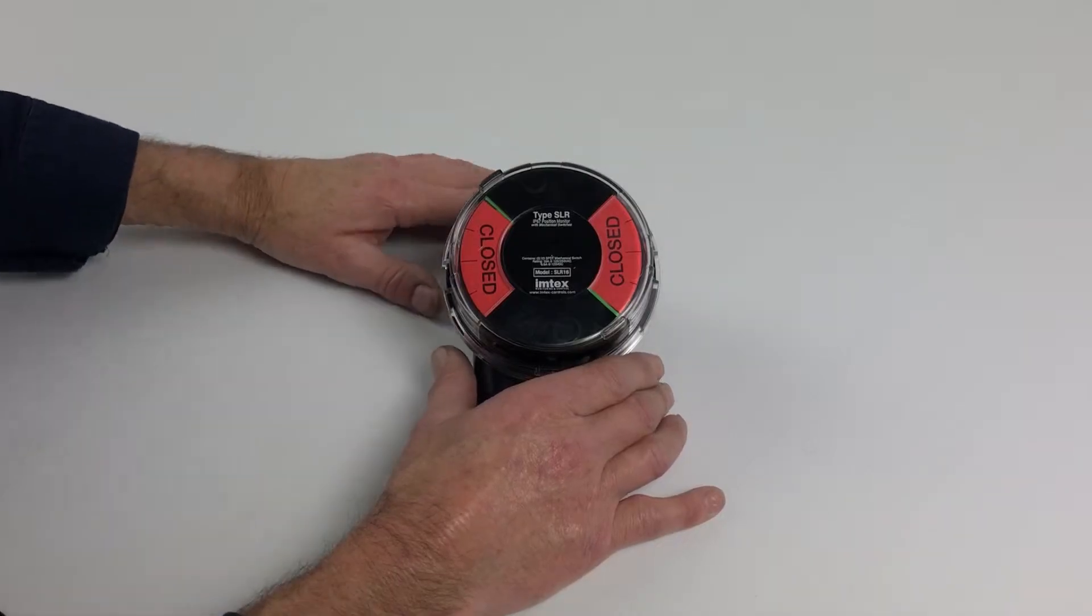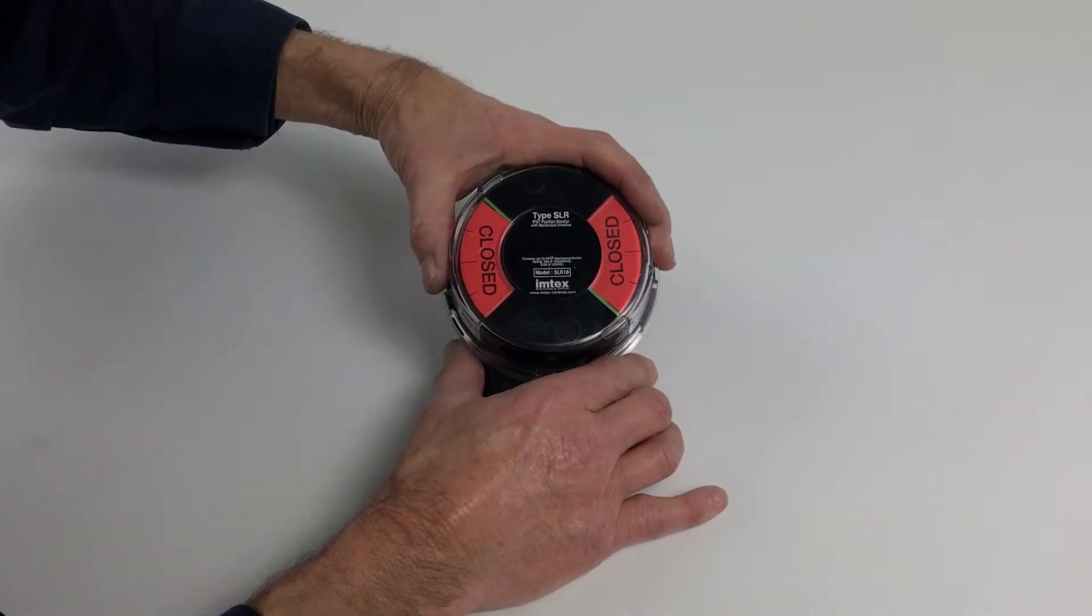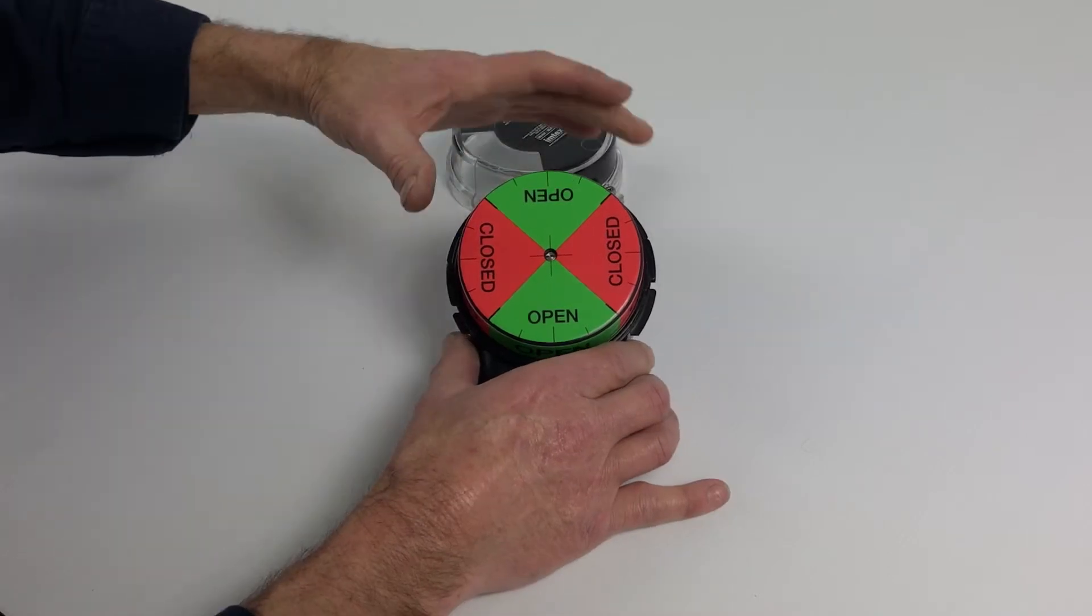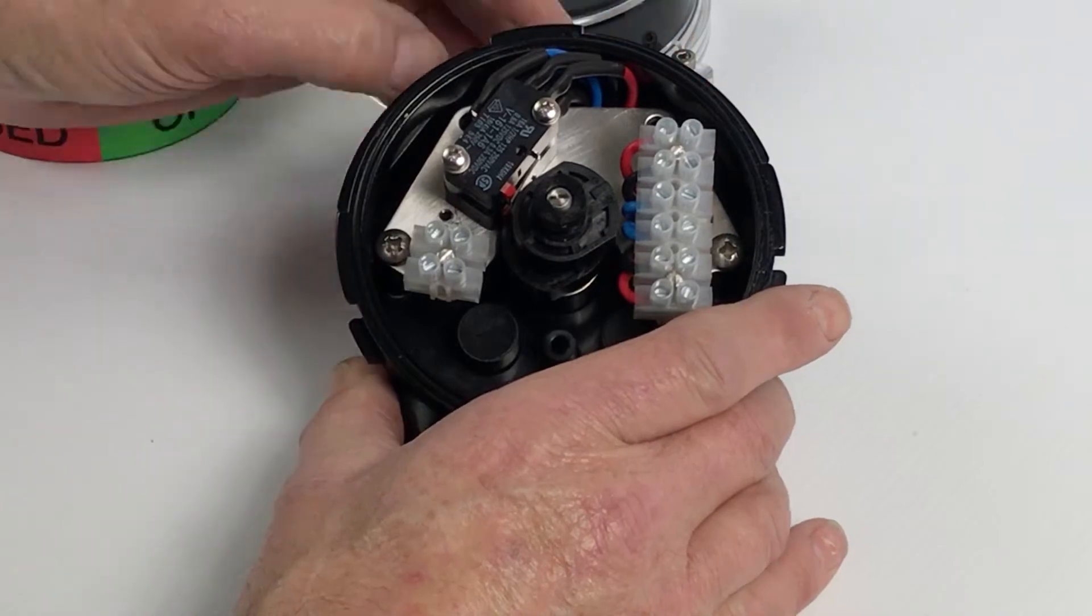We have a position indicator with two switches. To set the switches, we just remove this top cover on the Imtex. It's just like a bayonet type fitting. Remove the indicator cover and we have two switches.